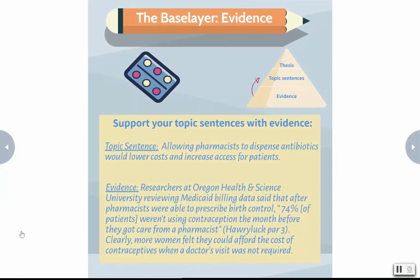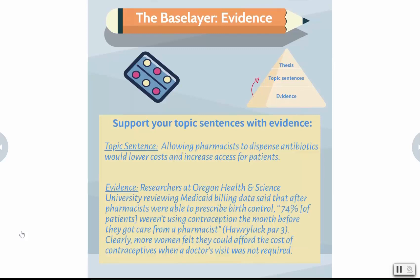On the bottom layer of blocks we have evidence supporting each reason. For example, in the topic sentence allowing pharmacists to dispense antibiotics with lower costs and increased access for patients, we have the evidence that 74% of patients weren't using contraceptives the month before they got care from a pharmacist. I want you to also notice that I've introduced and discussed this quote — that's something you'll want to do with every piece of evidence that you offer.